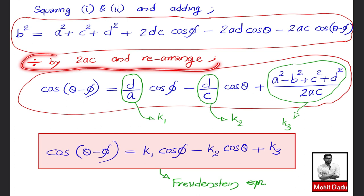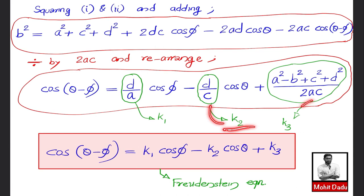Dividing through by 2ac and rearranging gives: cos(θ − φ) = (d/a)·cos(θ) − (d/c)·cos(φ) + [(a² − b² + c² + d²)/(2ac)]. Substituting K1 = d/a, K2 = d/c, and K3 = (a² − b² + c² + d²)/(2ac), the equation becomes: cos(θ − φ) = K1·cos(φ) − K2·cos(θ) + K3. This is the Freudenstein equation.